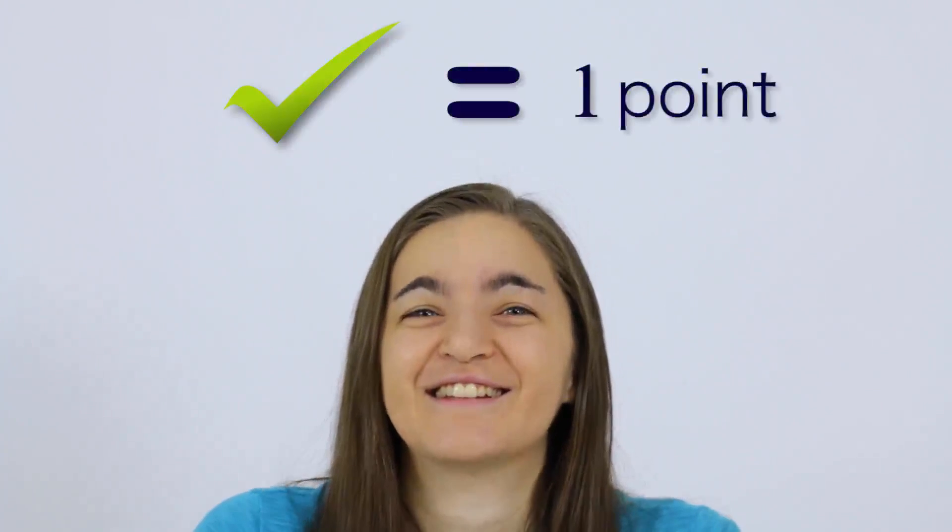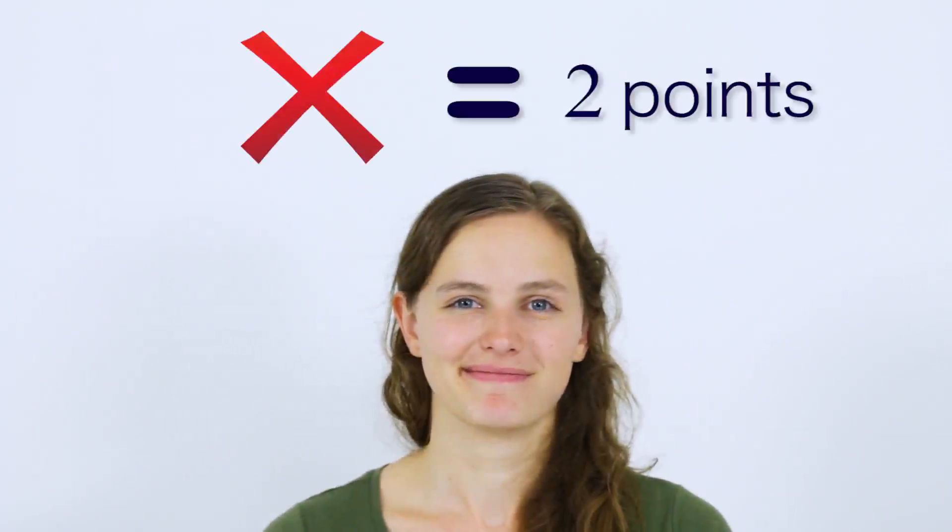If you're a trick, then you get a point for every player who thought your syllogism was true. And if you're the truth, you get two points if nobody voted for your syllogism.